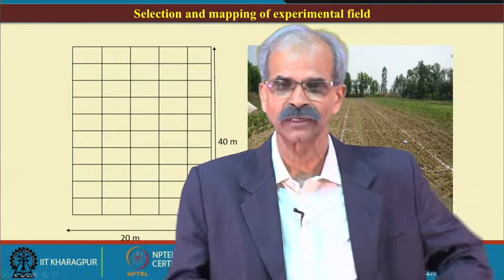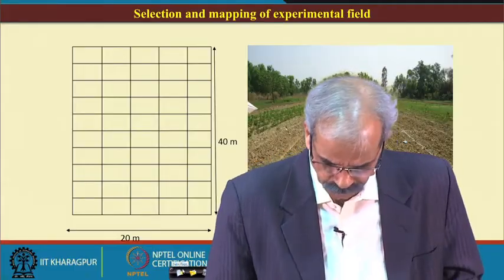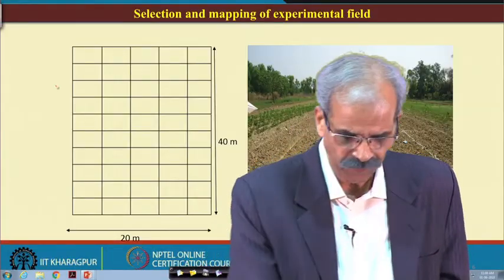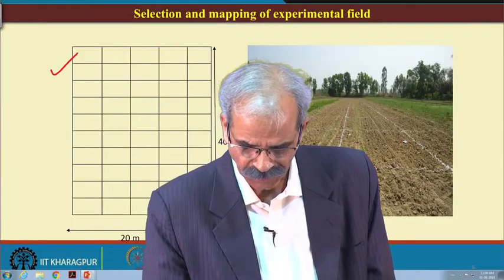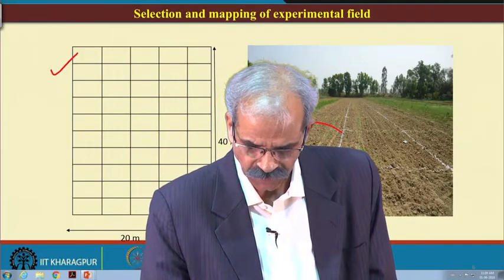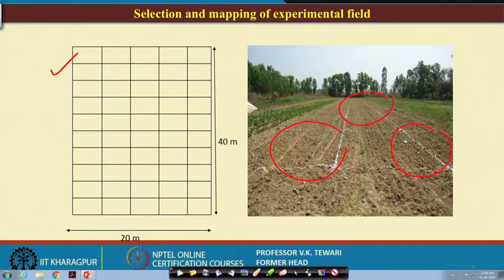For the selection and mapping of the experimental field, a 20 by 40 meter field has been chosen. You can see the grids which have been made here, and we are in a position to map this field. We have done this at IIT Kharagpur and we want to share this information so you can build on it and do something better.